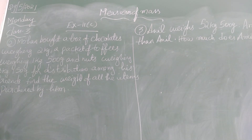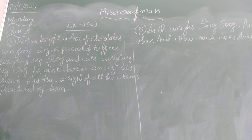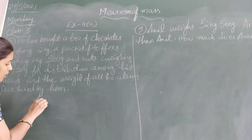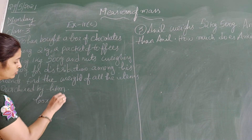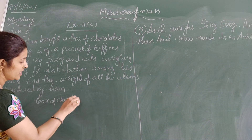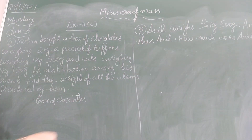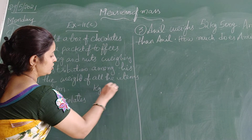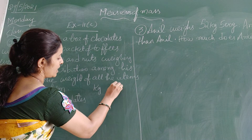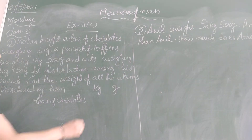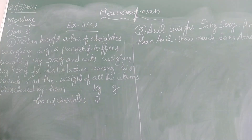So what we need to do here is add. Let us write the total. First, the box of chocolates — how much did he bring? We have kgs and grams. Chocolates weigh 2 kg.